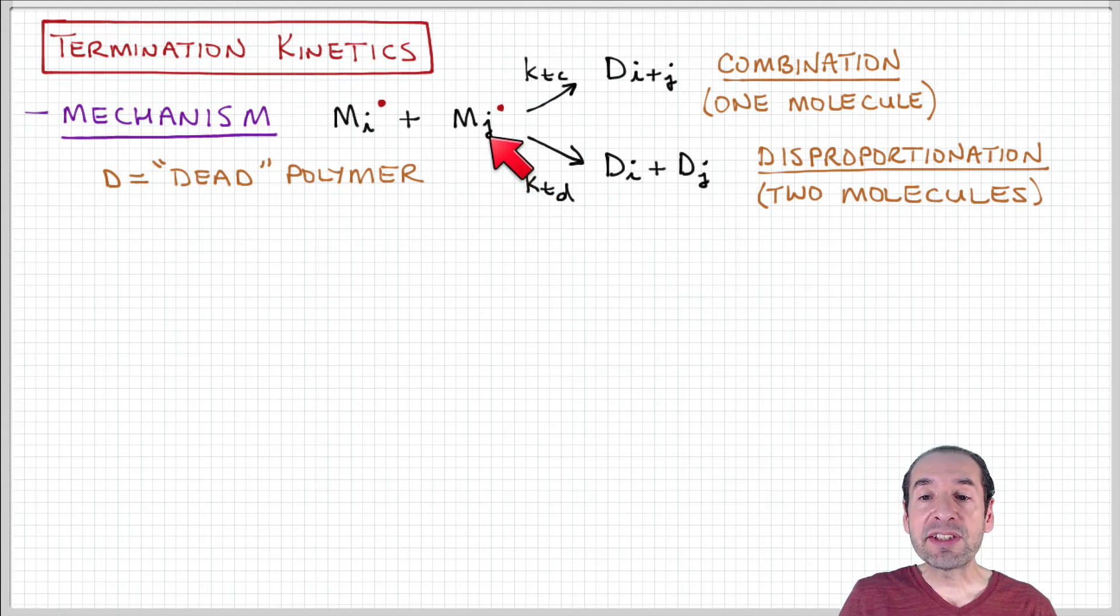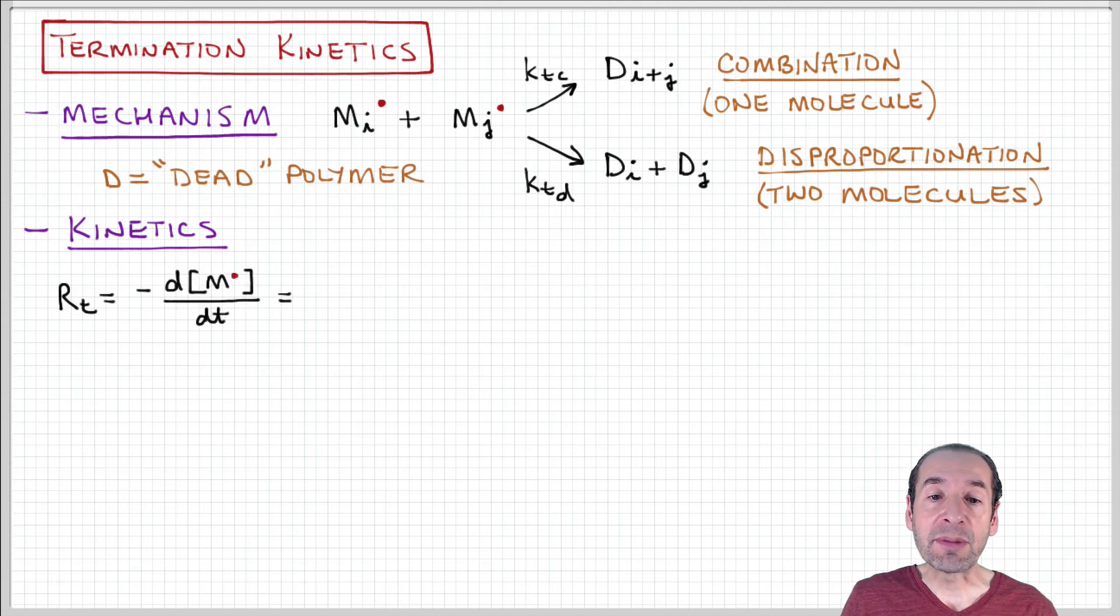The key point is that one process produces one dead polymer from two living polymers, and the other process produces two dead polymers from two living polymers.